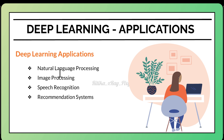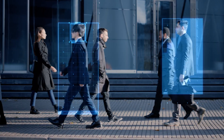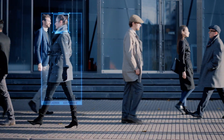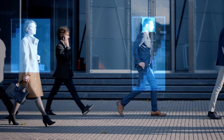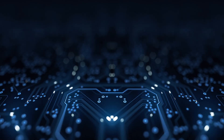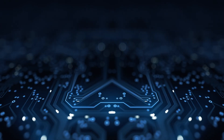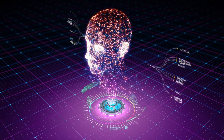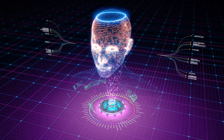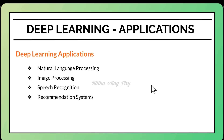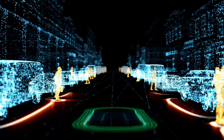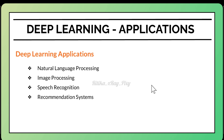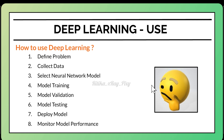Deep learning has multiple applications. In image processing, models like CNN are widely used for image and video processing — facial recognition, object detection, and medical image analysis. In natural language processing, deep learning is used for language translation, chatbots, and sentiment analysis. In speech recognition, deep learning powers voice assistants like Siri and Alexa, converting speech to text. It is also used in self-driving cars and recommendation systems like Amazon and Netflix.